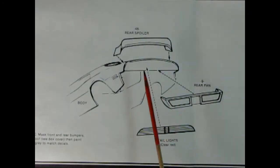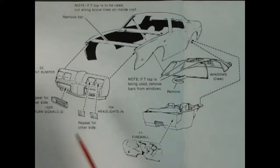Panel 11 shows all the body panels and things going on the back of our car, so here we have a rear spoiler and a rear pan, and then you'd add in your red tail lights in the back. It says mask front and rear bumpers and roof, see box art cover, then paint dark gray to match the decals.